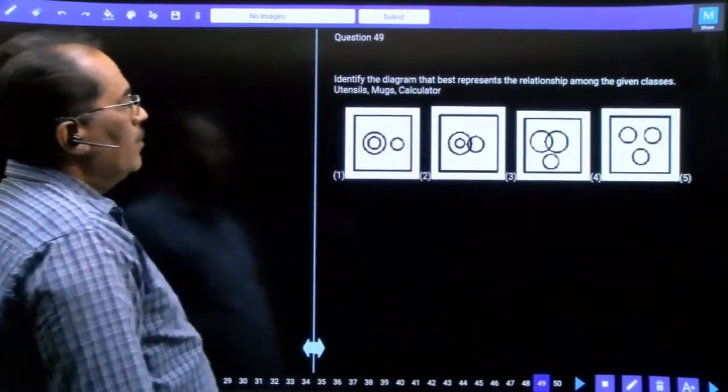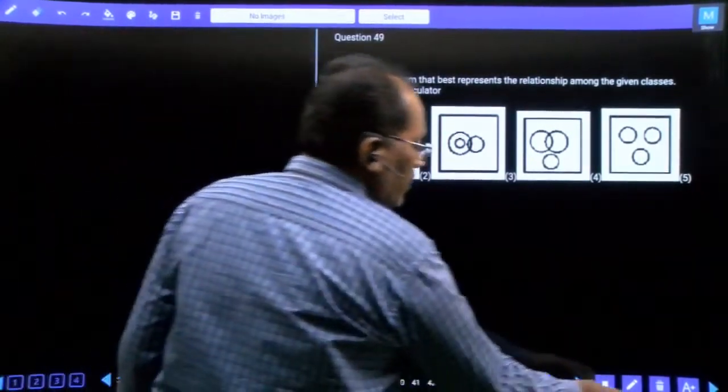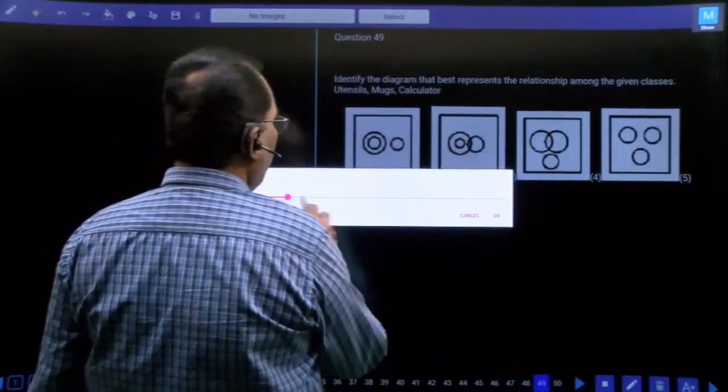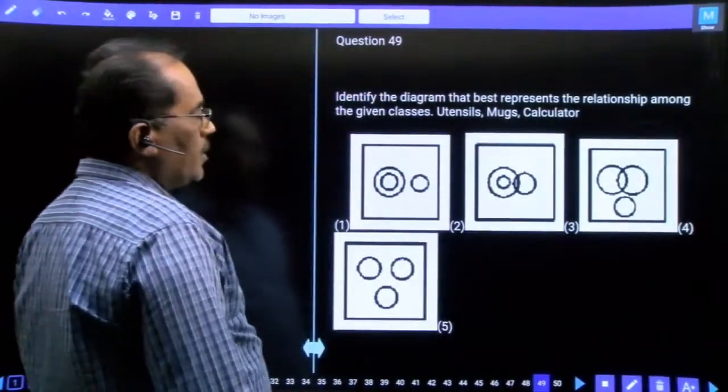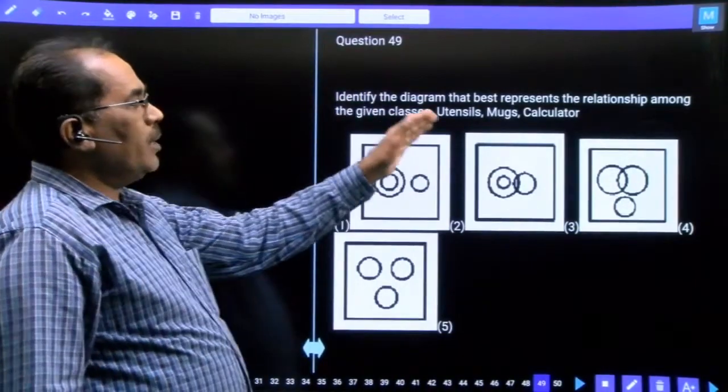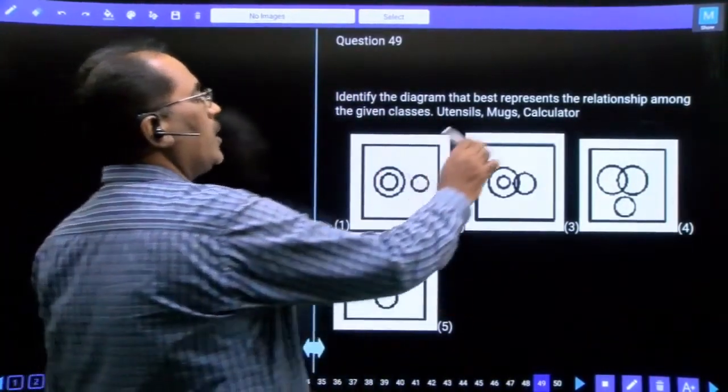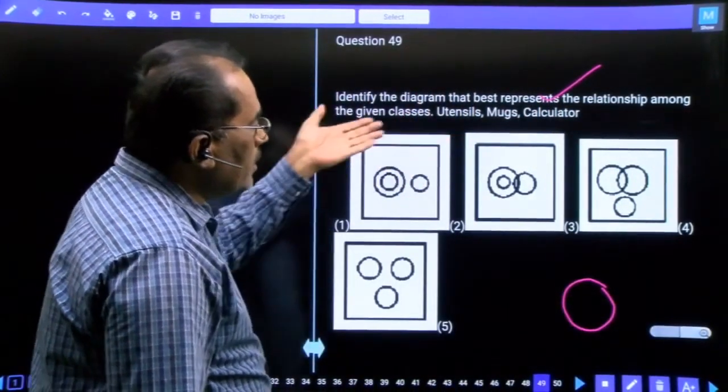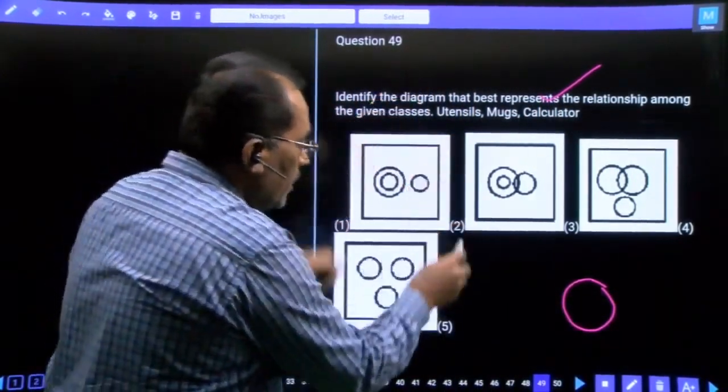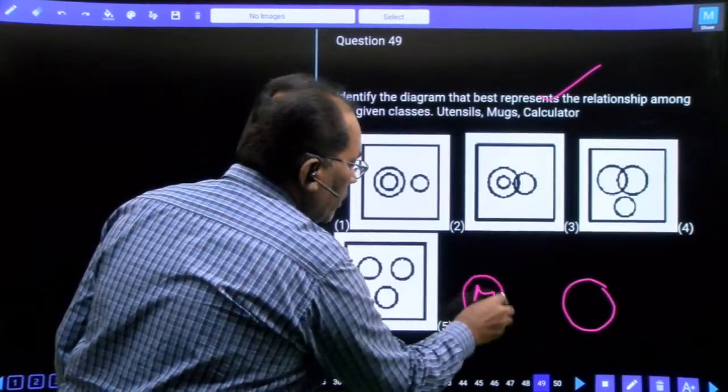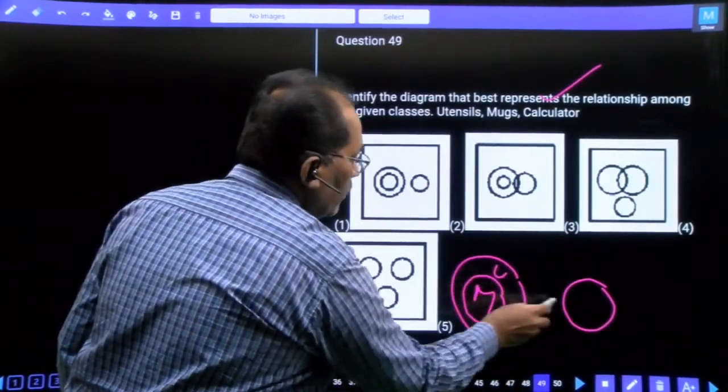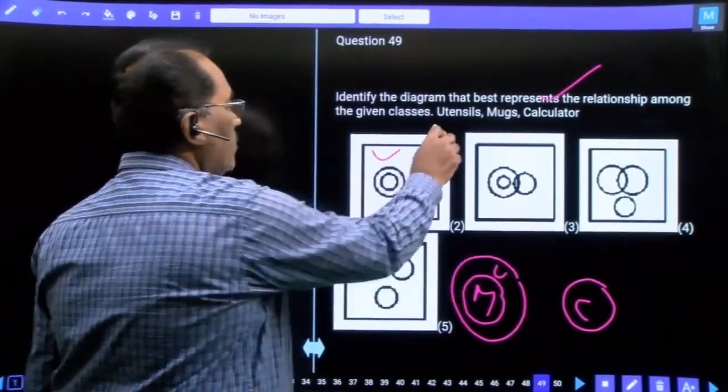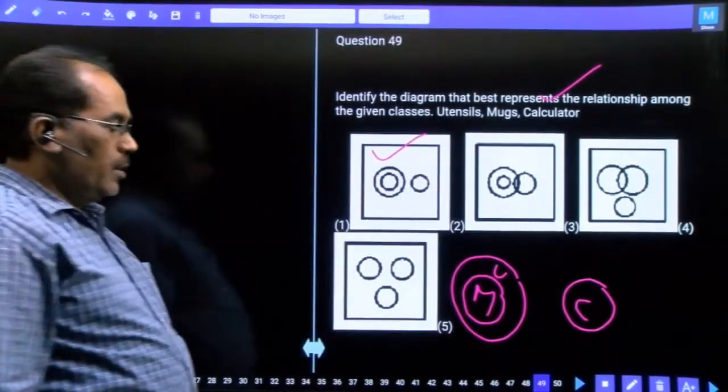Question 49, this is logical Venn diagram. The items are utensils, mugs, and calculators. Calculators are entirely different, separate type. All mugs are utensils, or mugs are not utensils. One item belongs to second item. Whereas calculator is different. One item belongs to second item, third item is entirely different. Our option is first option.